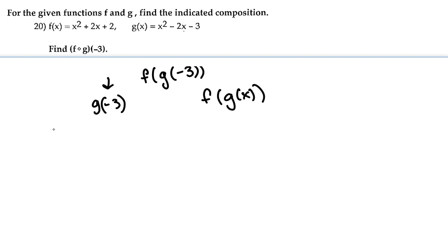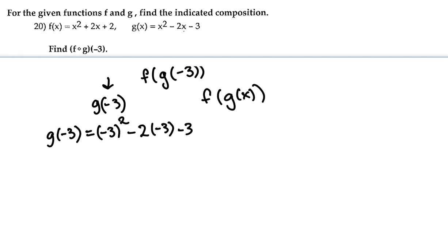Let's find g of negative 3 by plugging negative 3 in for every x in the g function. That's going to be negative 3 squared minus 2 times negative 3 minus 3. Negative 3 squared is positive 9, this gives us positive 6, minus 3, and this gives us 12.